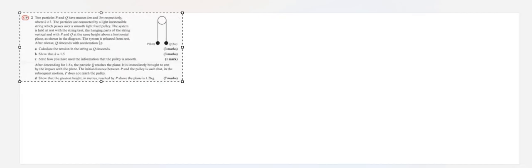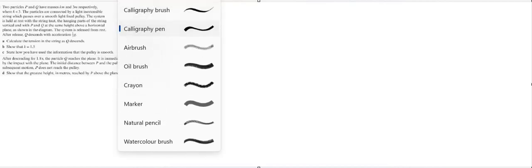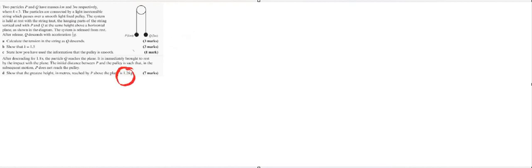The last part of the question is after descending for 1.8 seconds, the particle Q reaches the plane and is immediately brought to rest by the impact with the plane. The initial distance between P and the pulley is such that in the subsequent motion P does not reach the pulley and P is not stopped in any way, it moves freely. We're going to show the greatest height in meters reached by P above the plane is 1.26g. This is a show question, so we're going to show all of our steps. That's our goal, 1.26g is the maximum height.